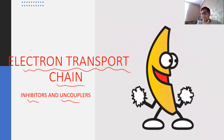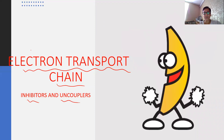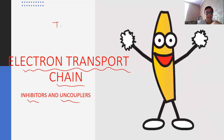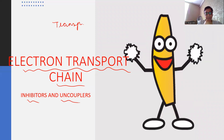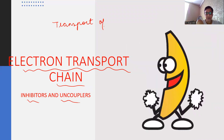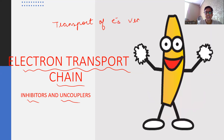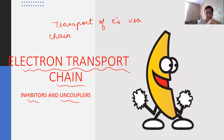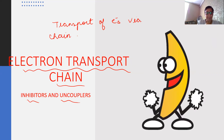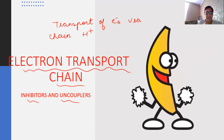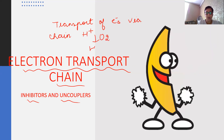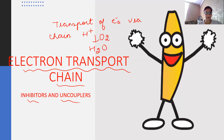Let me give you the simplest definition of electron transport chain. It is the transport of electrons via a chain, so that it combines with protons in the presence of oxygen to form metabolic water.